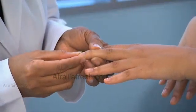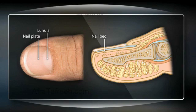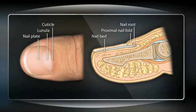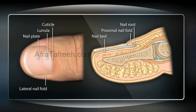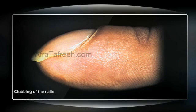Nails protect the distal ends of the fingers and toes. The firm, rectangular, and usually curving nail plate gets its pink color from the vascular nail bed to which the plate is firmly attached. Note the whitish moon, or lunula, and the free edge of the nail plate. The proximal nail fold covers roughly one-fourth of the nail plate, called the nail root. The cuticle extends from the proximal nail fold and, functioning as a seal, protects the space between the fold and the plate from external moisture. Lateral nail folds cover the sides of the nail plate. The angle between the proximal nail fold and the nail plate is normally less than 180 degrees. In conditions of chronic hypoxia, you may detect clubbing, in which case the nail plate may become more convex, with the angle increasing to greater than 180 degrees.